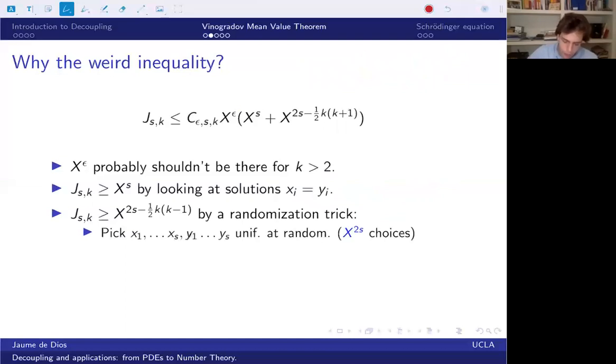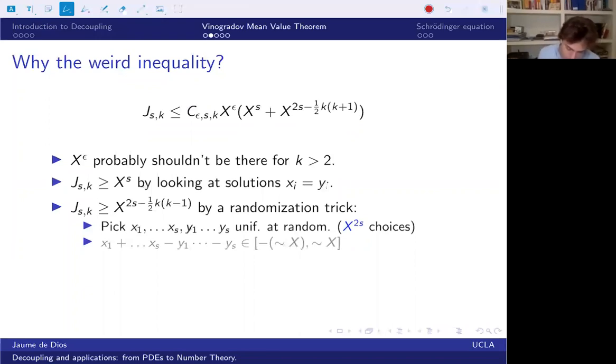So let's first look at what's the probability that the first equation holds. We have that x1 plus ... plus xs minus y1 minus ... ys. Since each of them is like X, then the sum is also comparable to X. It's like s times X, but s is small compared to X because we're looking at large X's. And this sort of tells you that the probability that this equation actually holds is similar to 1 over X because it's a random number between minus X and X. You can show that it's more likely to get zero than to get any other number. So the probability is at least 1 over X.